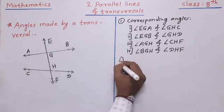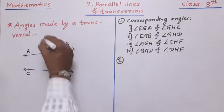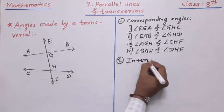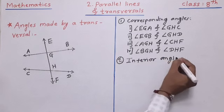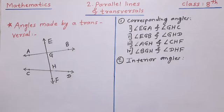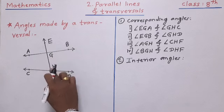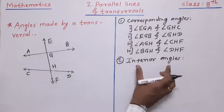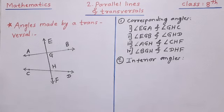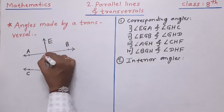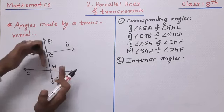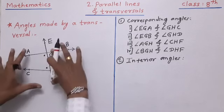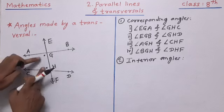The second type of angle formed due to the transversal of two lines is interior angles. How can we identify the interior angles and how many pairs are there? Only two pairs. Corresponding angles have four pairs, but interior angles have only two pairs. The position of interior angles is between the two lines on one side of the transversal. These are known as interior angles.